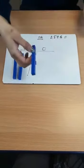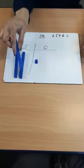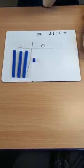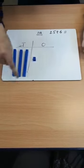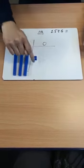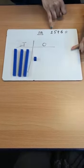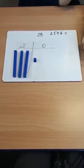And exchange it for one ten and put it in the tens column there. So now we've got three tens and one one. So we know that 25 plus 6 equals 31.